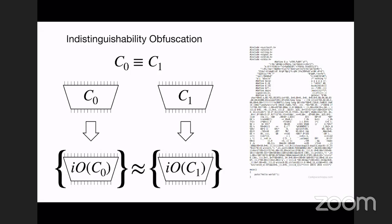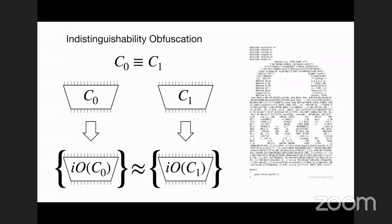Of course there is a catch: the security is not provable and relies on two heuristics. The first heuristic is circular security, which says it is fine to encrypt one's own secret key. This is a very well-known heuristic in cryptography and is essentially the only method we know to construct encryption schemes from lattices. The second heuristic is similar to the random oracle, which is also very well known and well studied in cryptography.